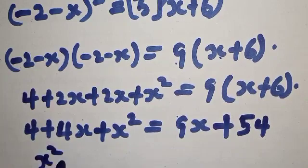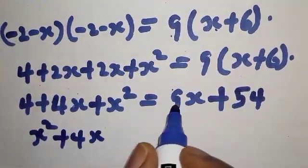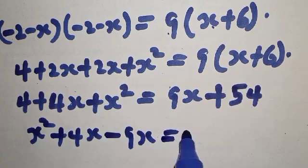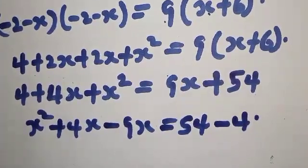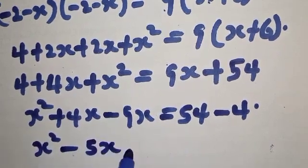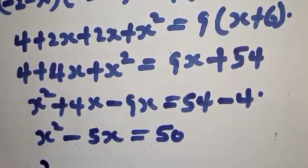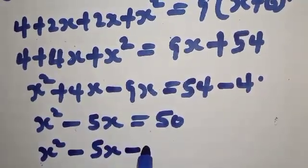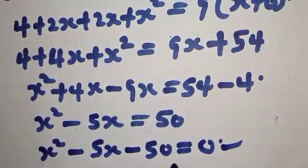Rearranging: X squared plus 4X minus 9X plus 4 minus 54 equals 0. That gives X squared minus 5X minus 50 equals 0. This is a quadratic equation and we need to solve it to find the value of X.